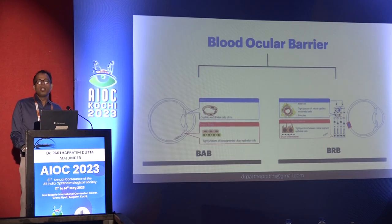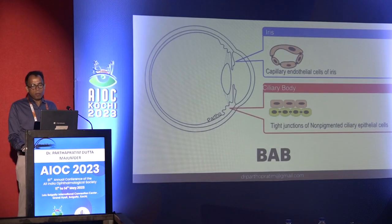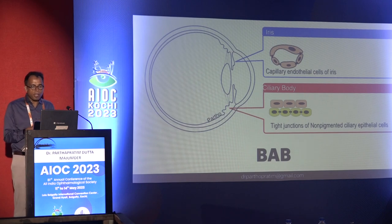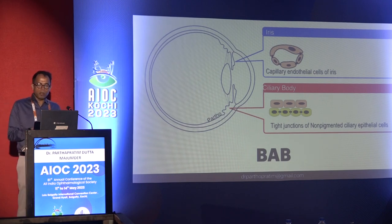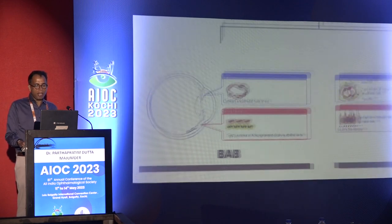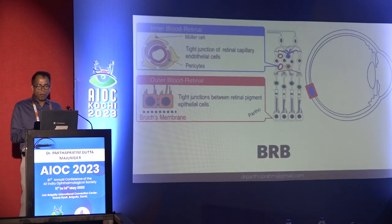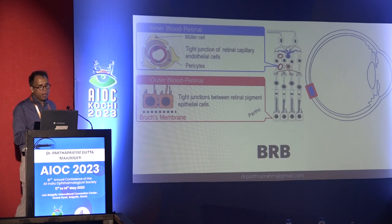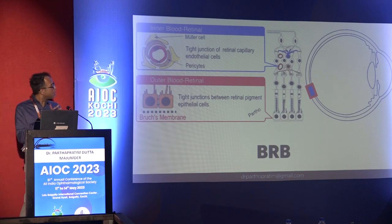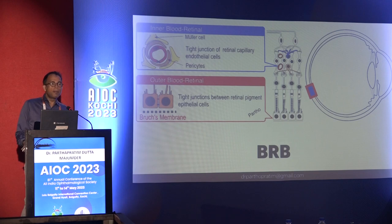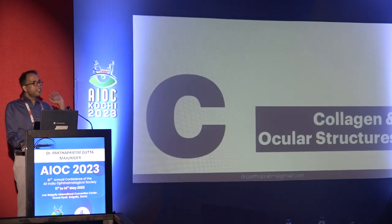Next, B for blood-ocular barriers. There are two types: the blood-aqueous barrier and the blood-retinal barrier. The blood-aqueous barrier is composed of tight junctions of the non-pigmented epithelium of the ciliary process, the endothelial cells of the iris vasculature, and the inner wall endothelium of Schlemm's canal. The blood-retinal barrier regulates fluid and molecular movement, with an inner barrier from tight junctions of retinal capillary endothelial cells and an outer barrier from tight junctions between retinal pigment epithelial cells.